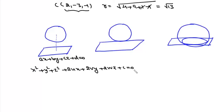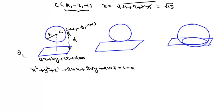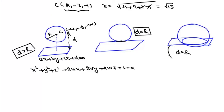We are given the plane ax + by + cz + d = 0 and the sphere x² + y² + z² + 2ux + 2vy + 2wz + c = 0. We find the center (−u, −v, −w) and radius r of the sphere, then find the perpendicular distance d from the center to the plane. If d > r the sphere and plane do not intersect; if d = r the plane touches the sphere; if d < r they intersect to form a circle.